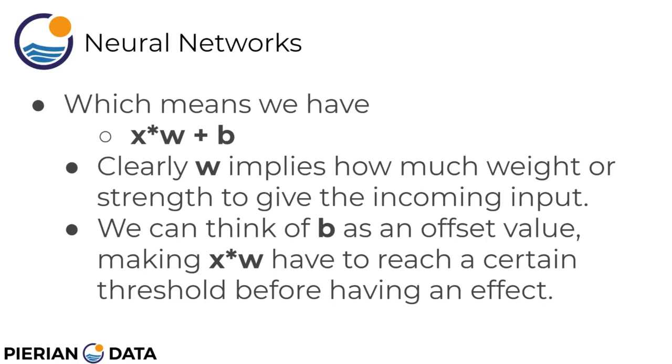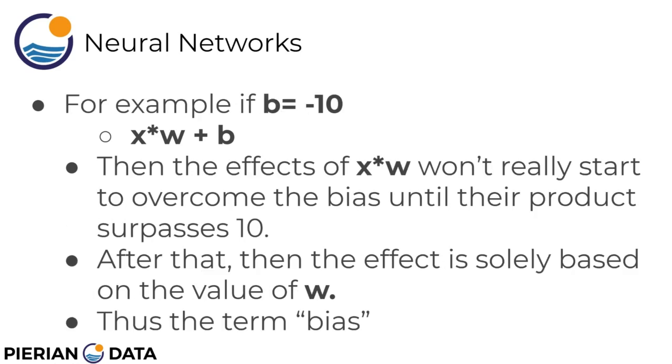We can also think of b as an offset value. Basically that makes it so that x times w has to reach a certain threshold before having an effect and overcoming that b term. For example, if we have b equal to negative 10, then the effects of x times w won't really start to overcome that b or bias term until their product surpasses 10. You can essentially think of that bias term as a threshold that the neuron has placed in order for the input times the weight to start taking some sort of majority effect.